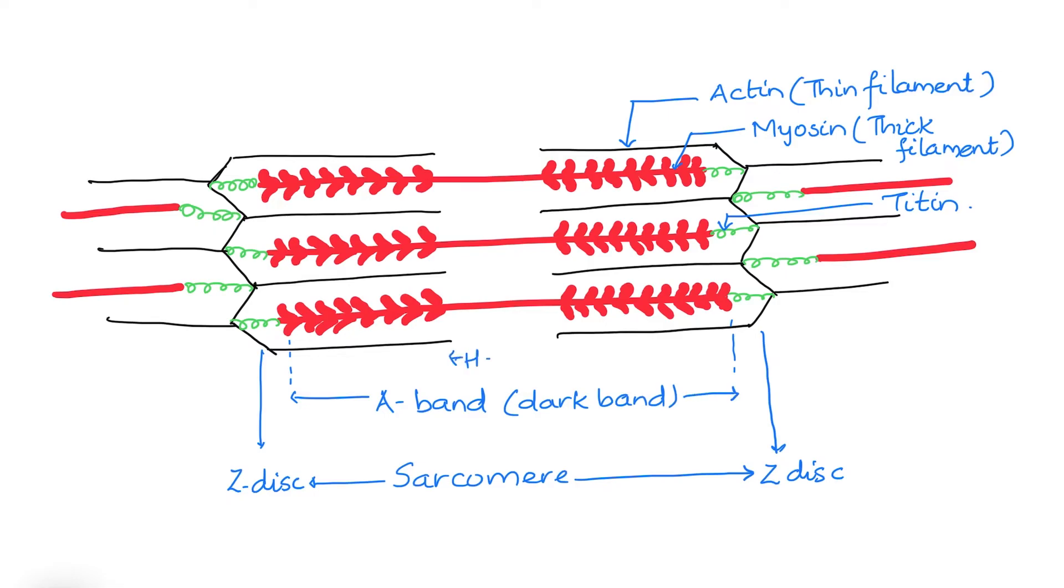The part in the middle with only myosin is the H zone. At the center of the H zone lies the M line.